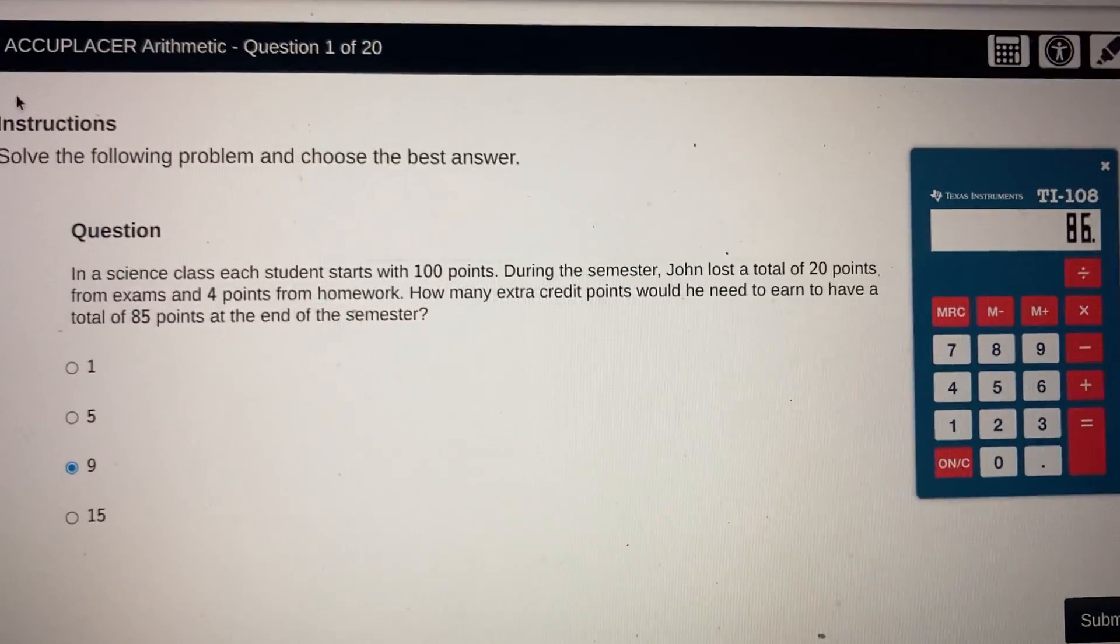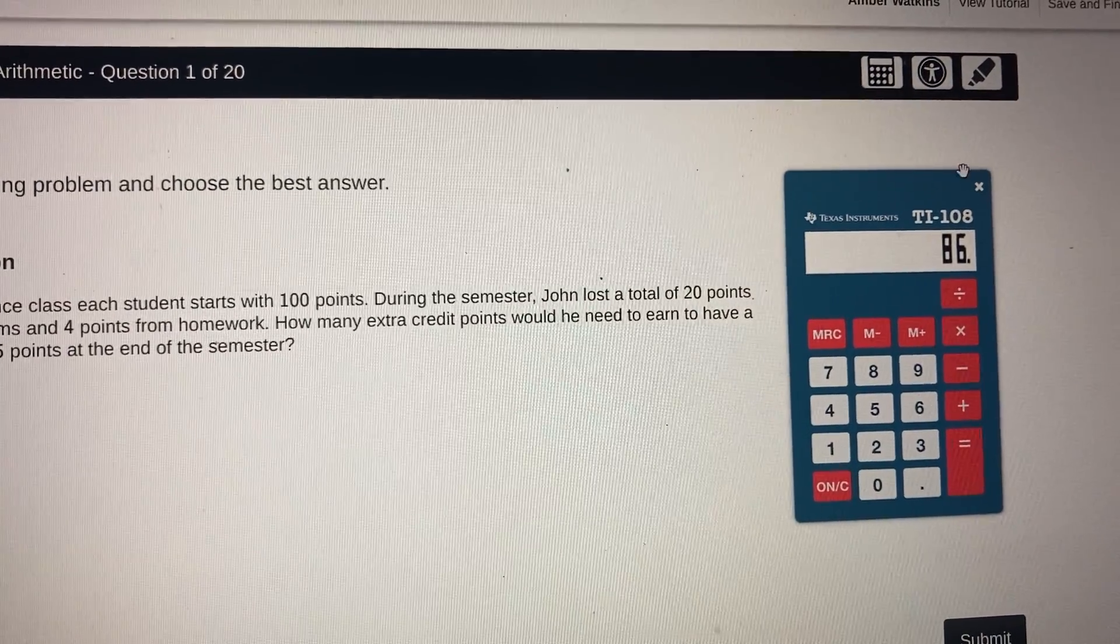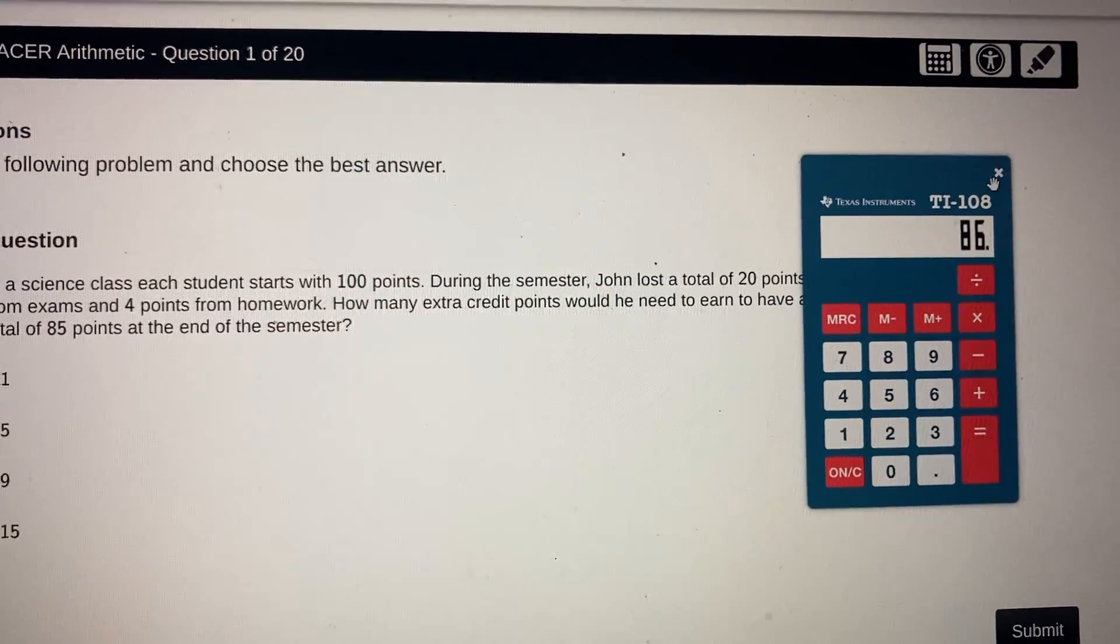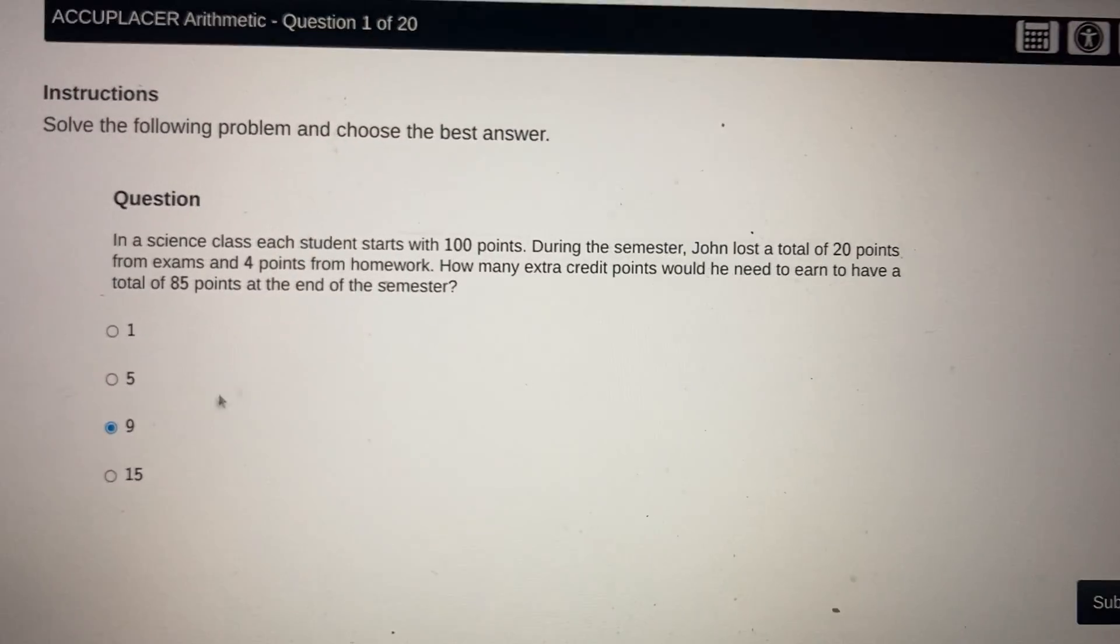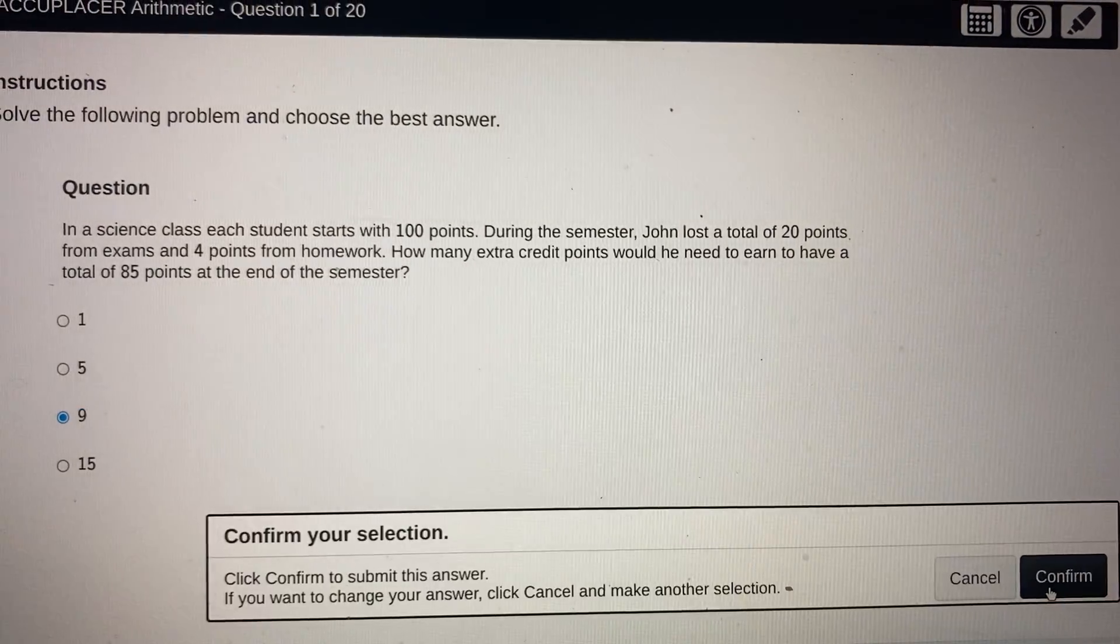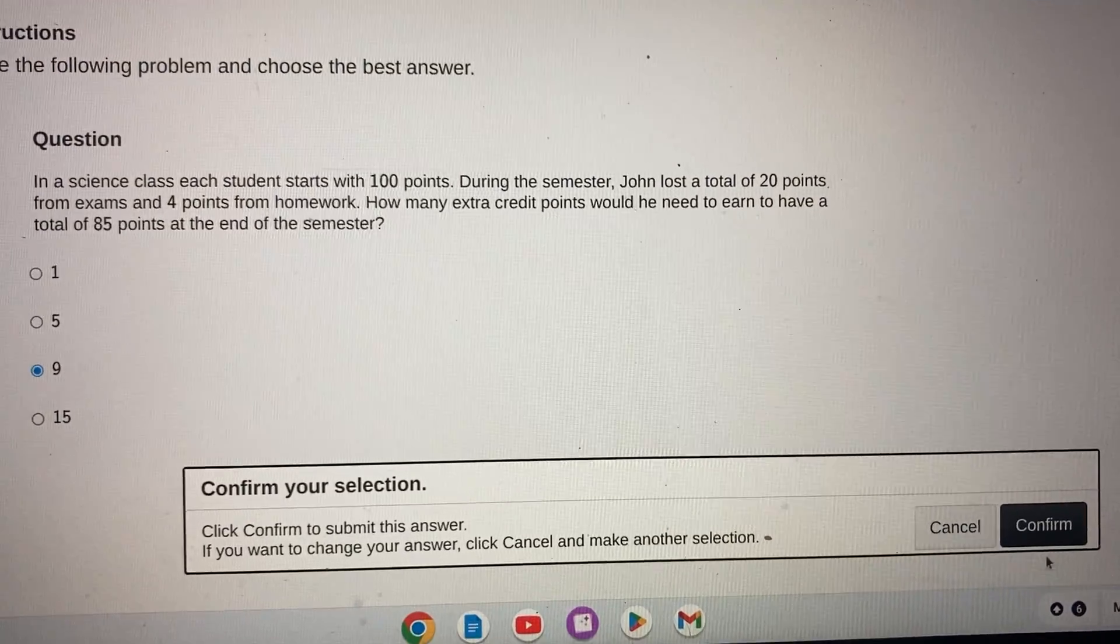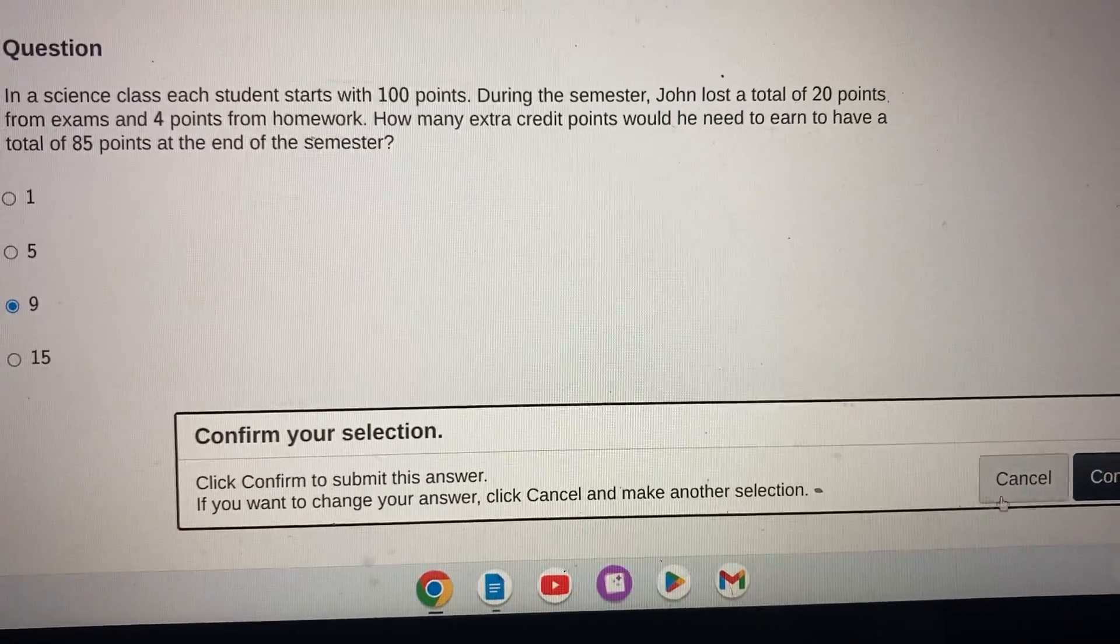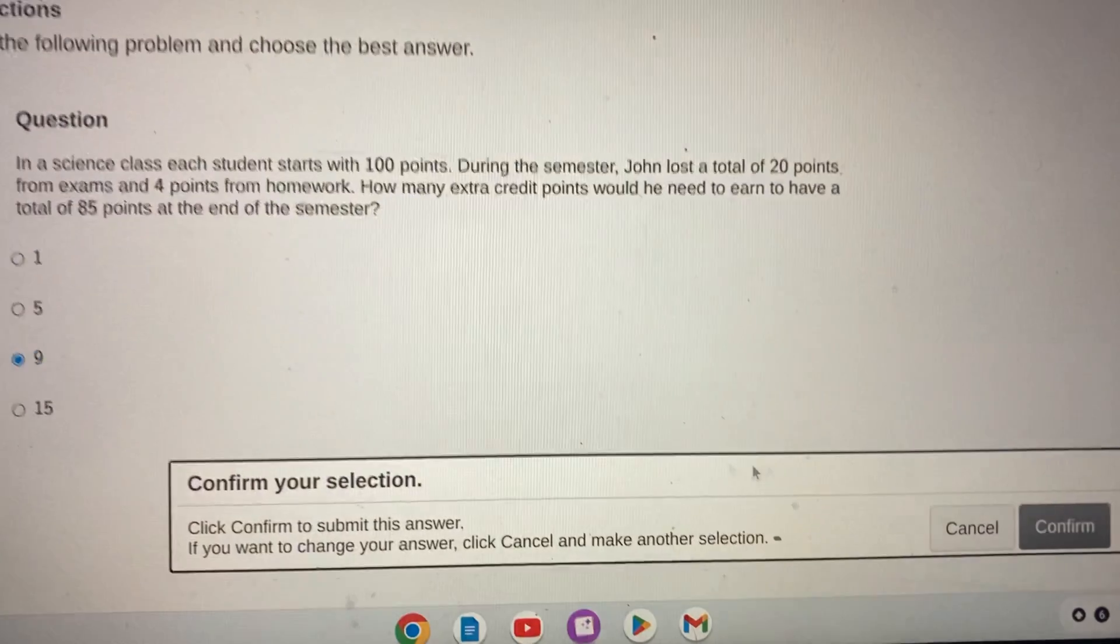Again, with Accuplacer Arithmetic, you just hit the calculator, you can move it around wherever you want on the screen, and when you're done you can hit X. I chose the number 9 and I'm going to hit submit, and then when I submit my answer, confirm that I want to submit it and hit confirm. All right, so I logged out, but I hope this helps.